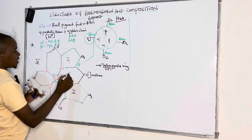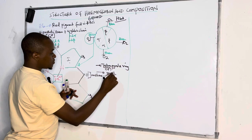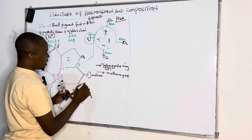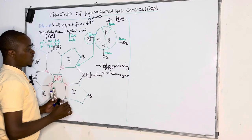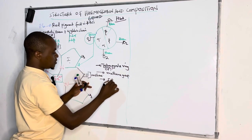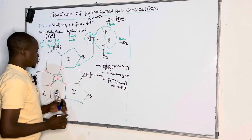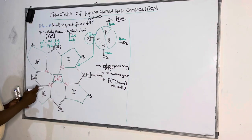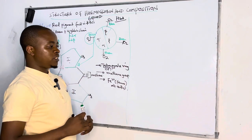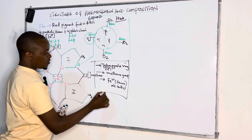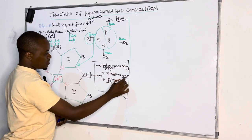Tetra means four — there are four pyrrole rings. These four tetrapyrrole rings are joined together by a methane bridge group, with another methane group at each junction. They meet at the center where we have iron in the ferrous state. This whole structure makes up the porphyrin ring. When iron is added to a porphyrin ring, we form what is called heme, which is red in color.